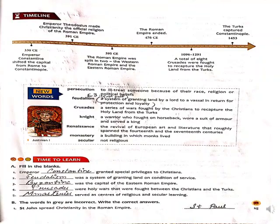In this slide we will discuss all the fill in the blanks. Number 1, on page number 15: Emperor Constantine granted special privileges to Christians. We have already done in the very beginning of this chapter that he did so by granting Christians freedom to worship, and he gave important jobs and many more things like that.